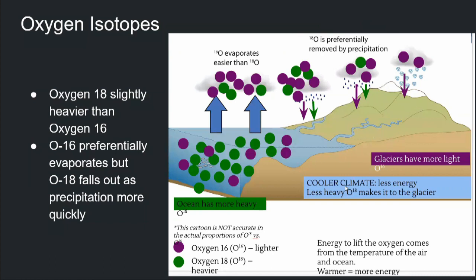What happens during cooler climates like glacial periods is that you have less energy available to evaporate the water from the ocean. If you have less energy available, it basically means you can take less O18 atoms because they are heavier. And what you can do is measure the ratio of how many atoms of O18 I have compared to O16, or the other way around.